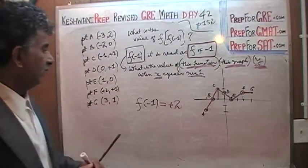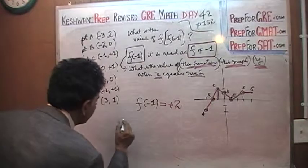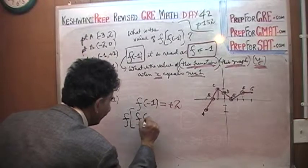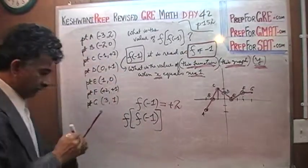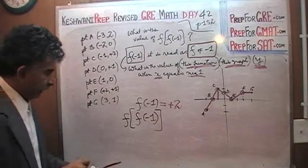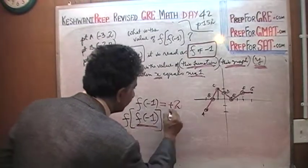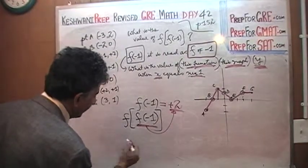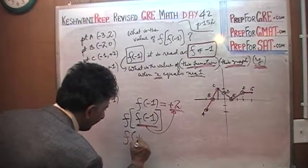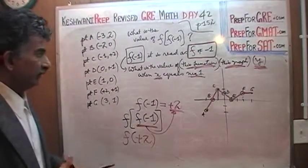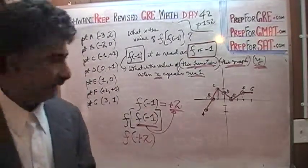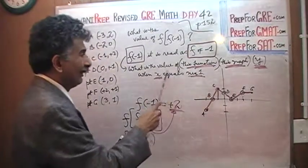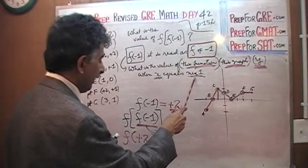So now we have done the first part. When x equals negative 1, we are talking about point C — and the value of this function at point C is positive 2. So f of negative 1 equals positive 2. Now we are going to substitute positive 2 for f of negative 1, and the new question is: what is f of positive 2?